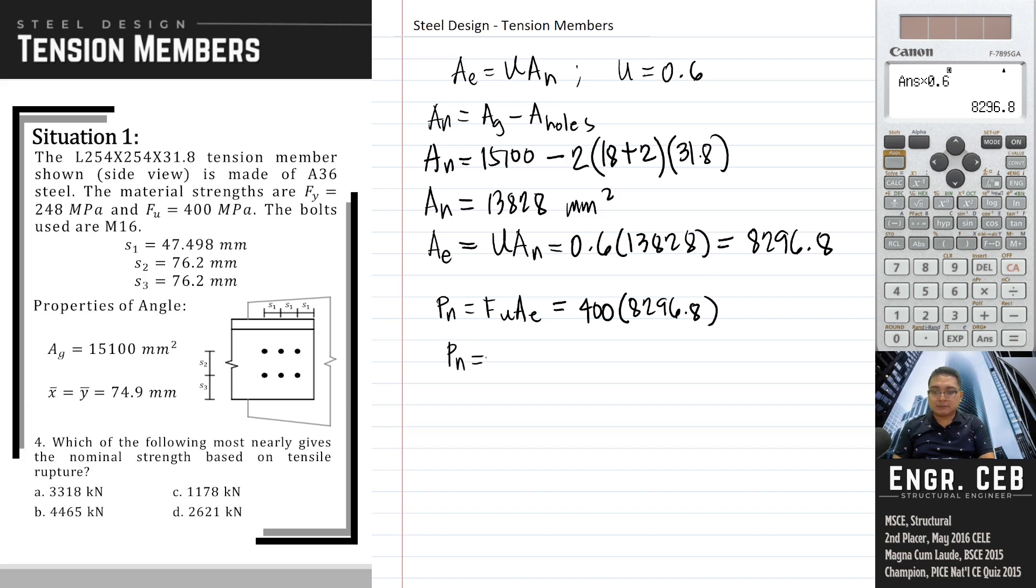F sub U is 400 and then A_E is 8296.8. So therefore, the nominal strength is 3318.74 newton. So if we're going to divide this by 1000, it will become 3318.72 kilonewtons. And that is letter D.